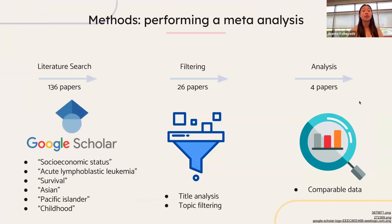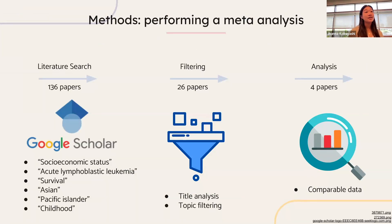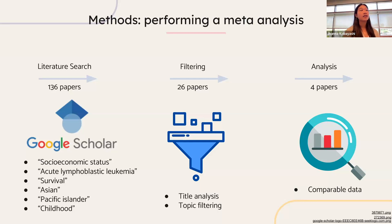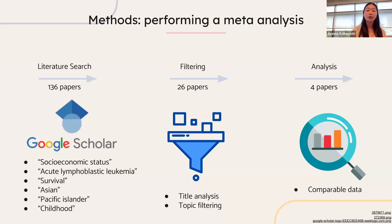My methods for this were to perform a meta-analysis, starting with a literature search. I used Google Scholar with keyword search terms of socioeconomic status, acute lymphoblastic leukemia, survival, Asian, Pacific Islander, and childhood. This refined my search to about 136 papers. Out of those, I looked at the titles and analyzed how relevant they were to my topic, which brought me down to about 26 papers. After a full analysis of these papers, I found four papers that had the necessary data for my analysis.